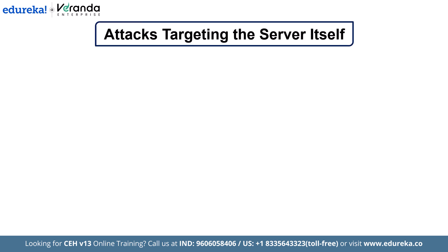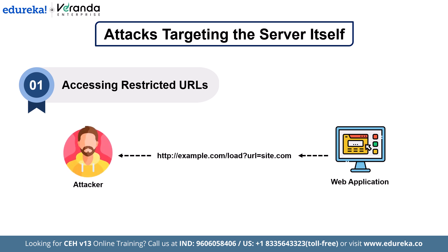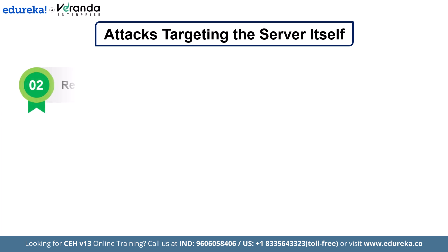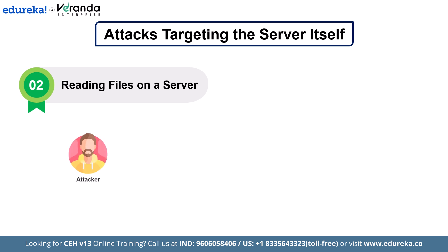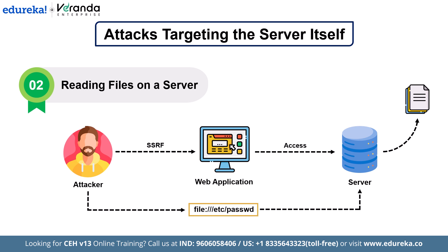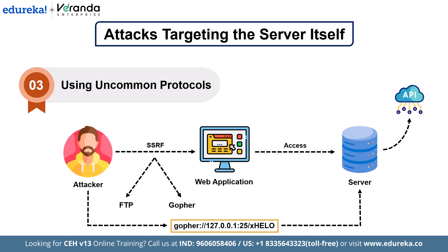First, SSRF attacks where the server itself becomes the target. Accessing restricted URLs — if there is no proper validation, an attacker could change the URL to something internal, potentially exposing sensitive data or admin panels. Reading files on the server — attackers use SSRF to access local files, such as crafting a request to retrieve system users, a valuable first step in hacking. Using uncommon protocols — SSRF can also abuse less common protocols like FTP or Gopher. For example, an attacker could send emails or interact with internal APIs using specially crafted payloads.